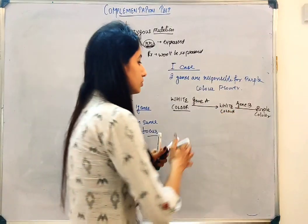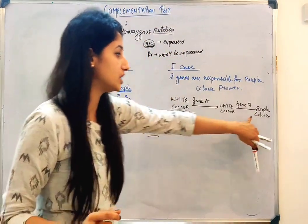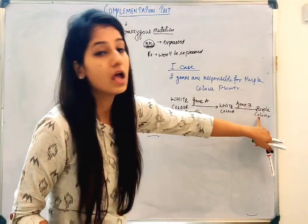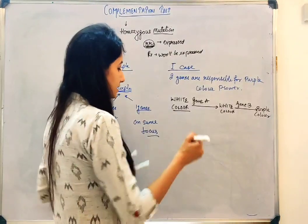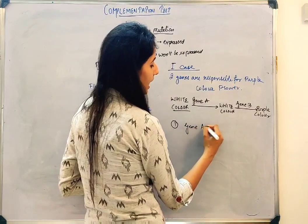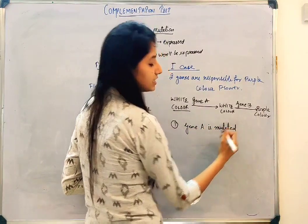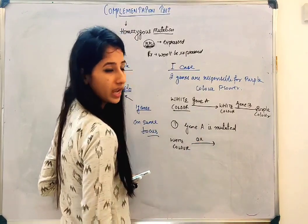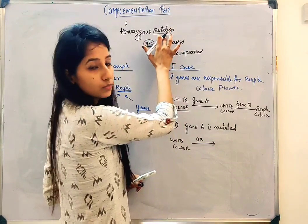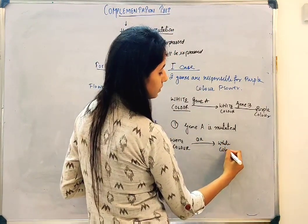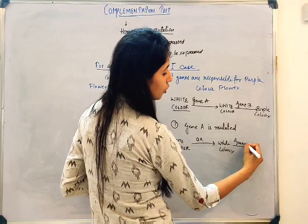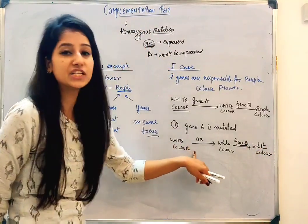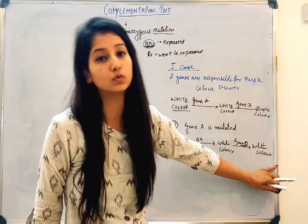From this, we see that both gene A and gene B are needed for the formation of purple color. If there is a mutation in any of them — in gene A or gene B — the purple color is not formed. For example, if gene A is mutated (homozygous mutation, aa), the flower remains white even though gene B is normal. Similarly, if gene B is mutated, the flower is still white because we need gene B for the formation of purple color.